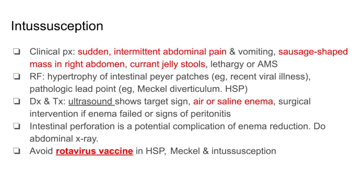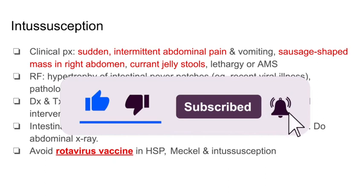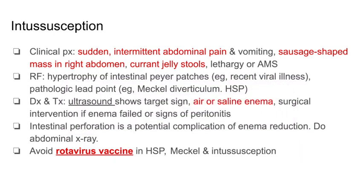Risk factors for intussusception include hypertrophy of the intestinal Peyer's patches due to a recent viral illness, or pathologic lead points such as Meckel's diverticulum or Henoch-Schönlein purpura. To diagnose and treat these patients, you can use air or saline enema. Ultrasound would show a target sign, and surgical intervention is done if the enema fails or if there are signs of peritonitis.